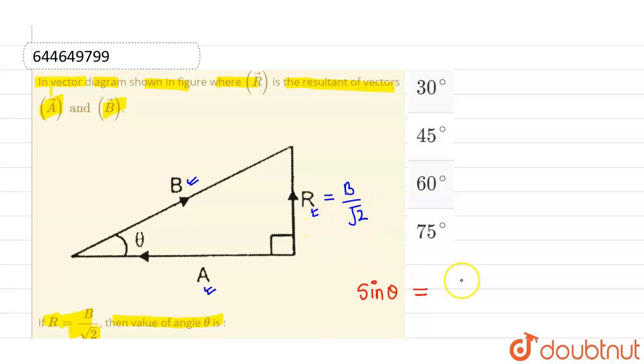So in this case, perpendicular is r divided by hypotenuse which is b. Now again, we know that r is nothing but b by root 2. So this will be b by root 2 divided by b. Now b, b will cancel out and overall, I will be getting 1 by root 2 which equals sin theta.